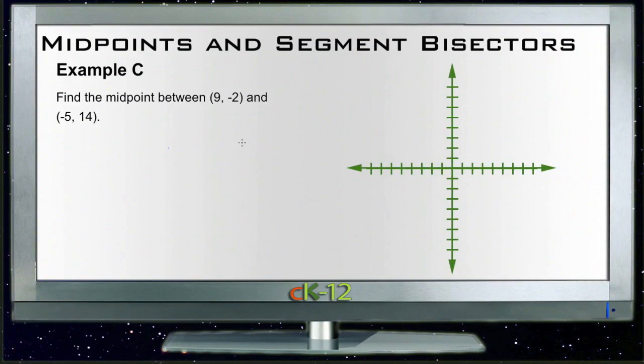All right, Example C is to find the midpoint between point (9, -2), which ought to be about over here somewhere, and point (-5, 14), which ought to be up about here somewhere. So we're looking for the middle of this line segment right here, somewhere along in this area right about here.